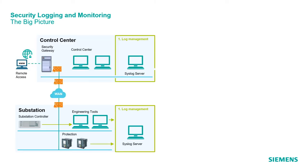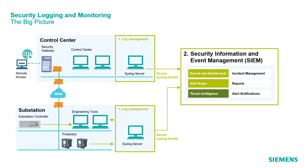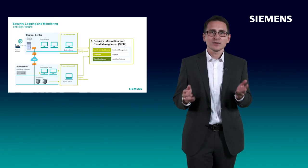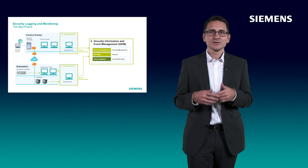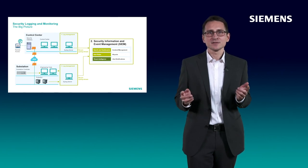The same concept can be applied to a control center. The large amount and variety of log files requires automated analysis. Therefore, the syslog servers forward the logs via a secure channel to a central security information and event management system. This SIEM can collect logs from several substations at the same time. The logs are stored and continuously analyzed to detect anomalies and attacks in the connected systems.